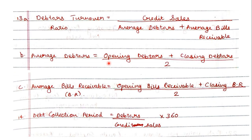Next we have debtors turnover ratio, which is credit sales upon average debtors plus average bills receivable. Average debtors is opening debtors plus closing debtors divided by 2. Average bills receivable is opening bills receivable plus closing bills receivable divided by 2.